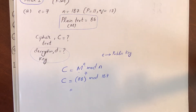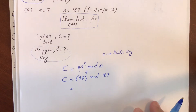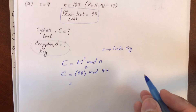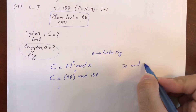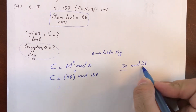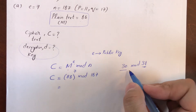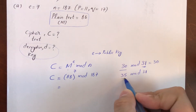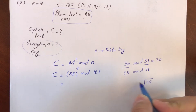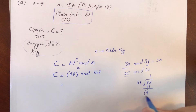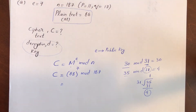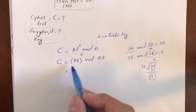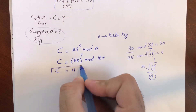If you solve 88 raised to power 7 mod 187, you can use a scientific calculator or the Google calculator. To give a basic idea of how modulus works: if you have 30 mod 31, the value on the left is smaller, so the answer is 30. If it were 35 mod 31, we divide — 35 divided by 31 gives remainder 4, so the answer is 4. Modulus is just like a cap or limit. If you solve the equation, the ciphertext is going to be 11.